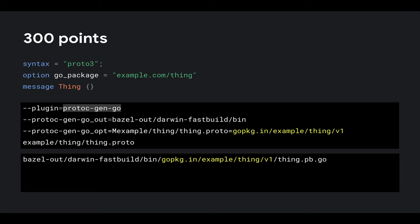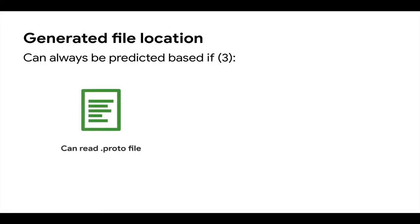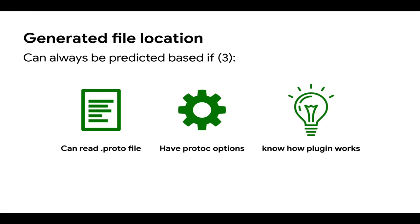We can use this to help crystallize our understanding of the types of information we need in order to correctly predict where a generated file will end up. It turns out there are three: you need to be able to read the proto file because it's really the source of truth, you need to know the protoc options, and you need some understanding of how the plugin implementation works and how it interprets the first two. That's key because this Gazelle extension is really a little mini framework for predicting where our generated files are going to end up.